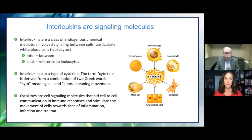We're going to be talking about interleukins. Interleukin 101: they are chemical mediators involving signaling between cells, particularly white blood cells. 'Inter' means between, 'leukin' refers to leukocytes. They're a type of cytokine — from the Greek 'cyto' meaning cell and 'kynos' meaning movement. They're signaling molecules that aid cell-to-cell communication in immune responses and stimulate the movement of cells towards sites of inflammation, infection, and trauma.